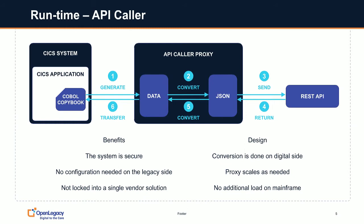It's very easy to scale this system because you can add to the digital side and do collaboration between different proxies, or just get a more powerful processor. The system is secure — security is a key consideration. There's no configuration needed on the legacy side; you don't have to make a lot of changes to your z/OS system. We don't care what version of CICS you're using. We can also do this with IMS and other systems, and you're not locked into a single vendor solution — you can deploy on any cloud you want.